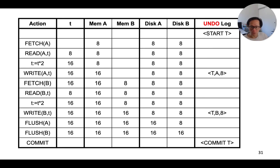Let's see an example of how this works. Suppose we have the following list of actions done by a transaction. The second line, fetch of A, means that we read data element A from the disk into memory. The third line, read of A, corresponds to reading A from memory and storing it into a program variable, lowercase T. The transaction writes to both A and B as it executes.